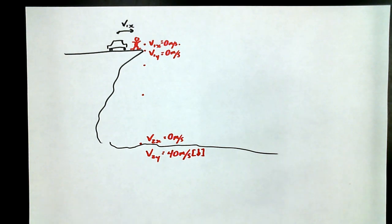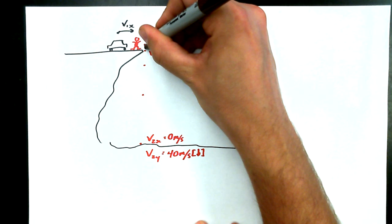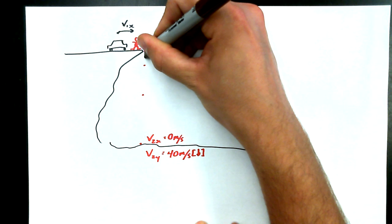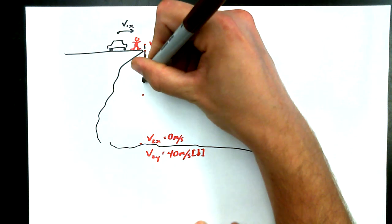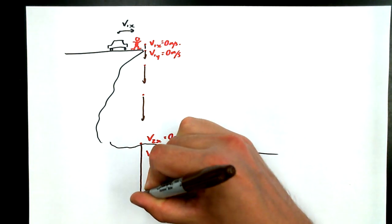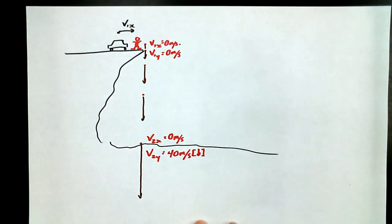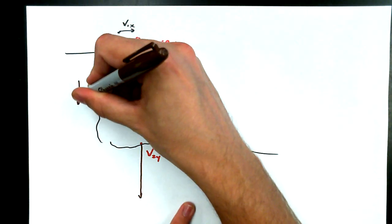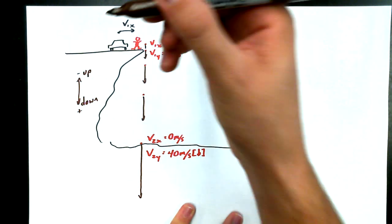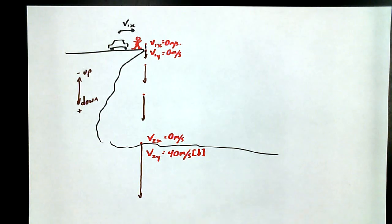And so if I wanted to represent these as vectors, I could draw little arrows on here. It's getting faster and faster and faster. Down. Be careful, not south, down. So we can say that down is positive. And we can call up negative. So the super fun ball is going to get faster and faster and faster as it falls.